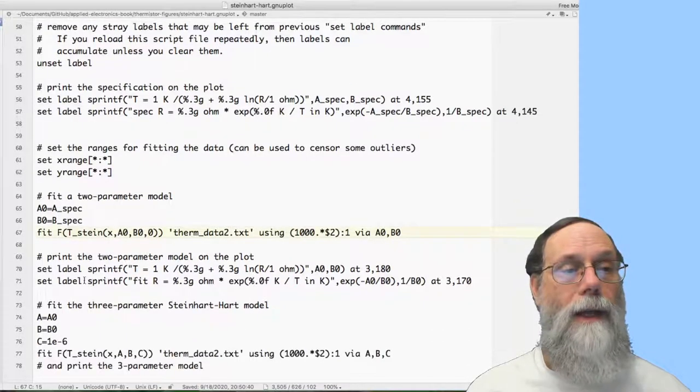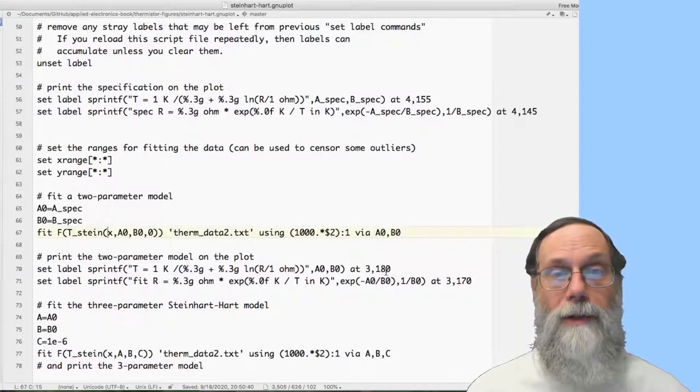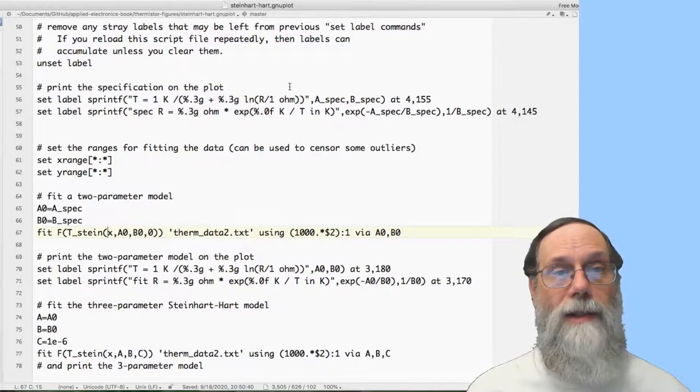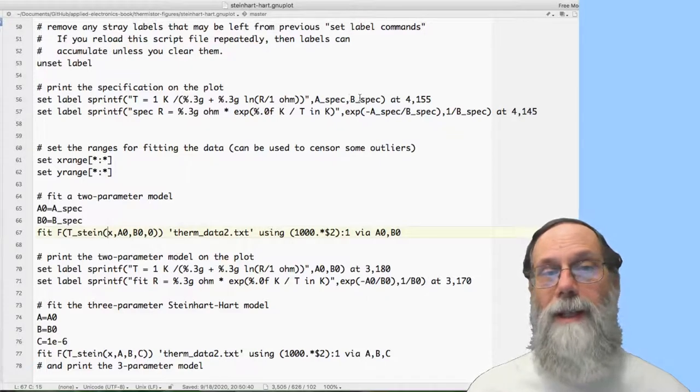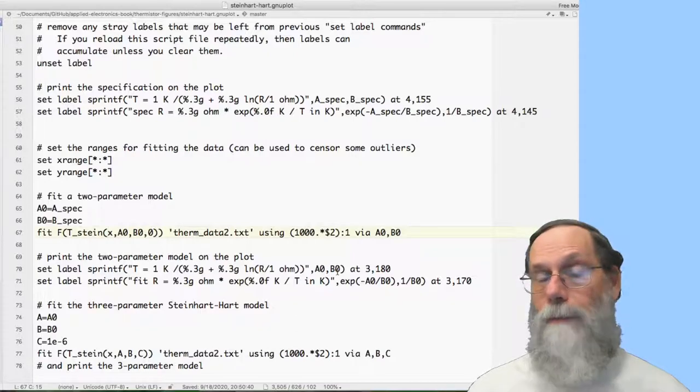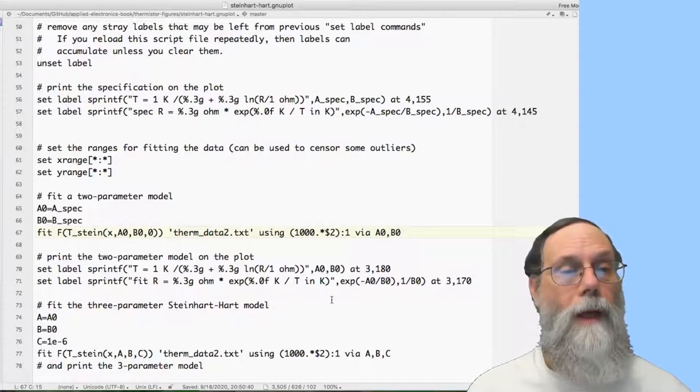And then I've got another pair of labels being printed here. Notice that they're at a different location than I did before. But it's essentially looking like the same thing, except for instead of the specified a and b values, I'm now printing a0 and b0.